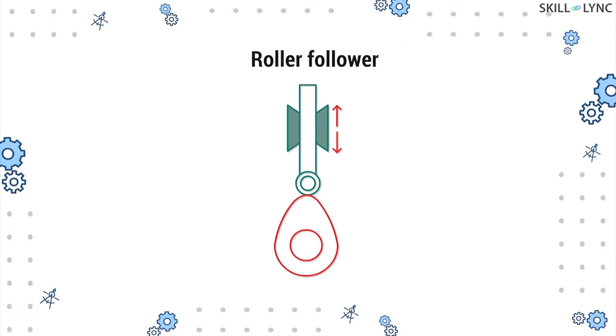Roller followers have a roller at the end of the follower stem. The roller rotates with the cam, reducing the sliding motion by rolling action, resulting in minimal wear.